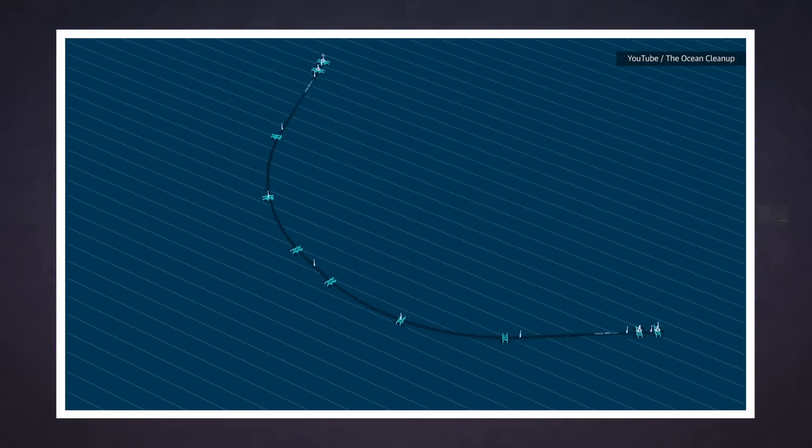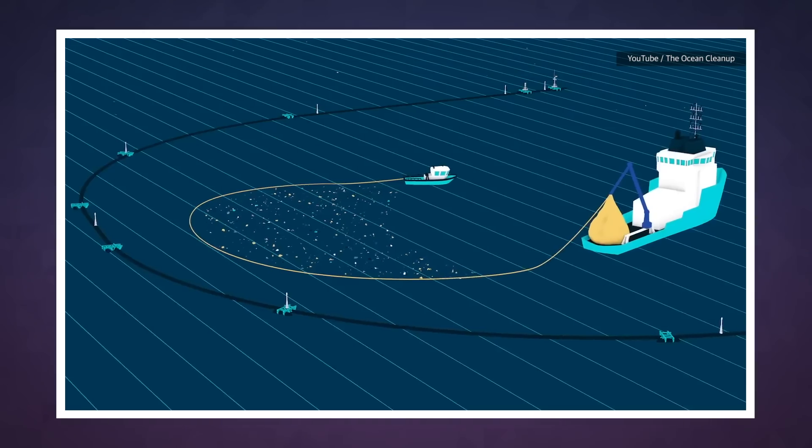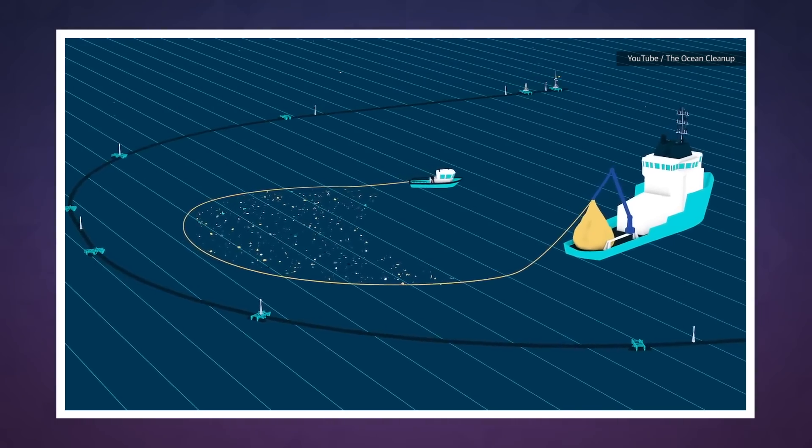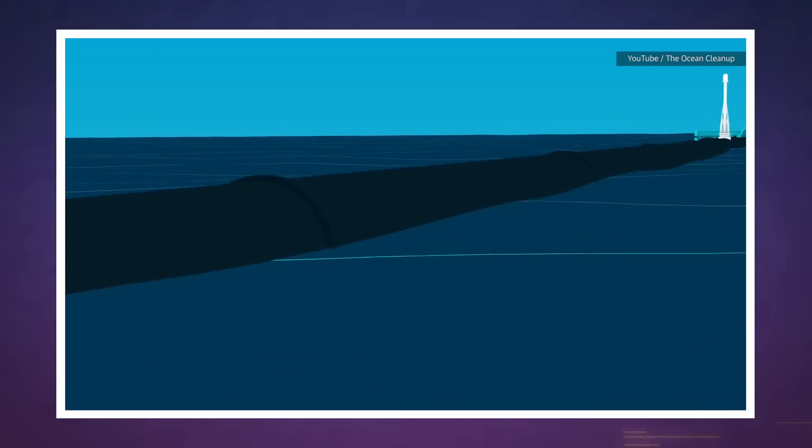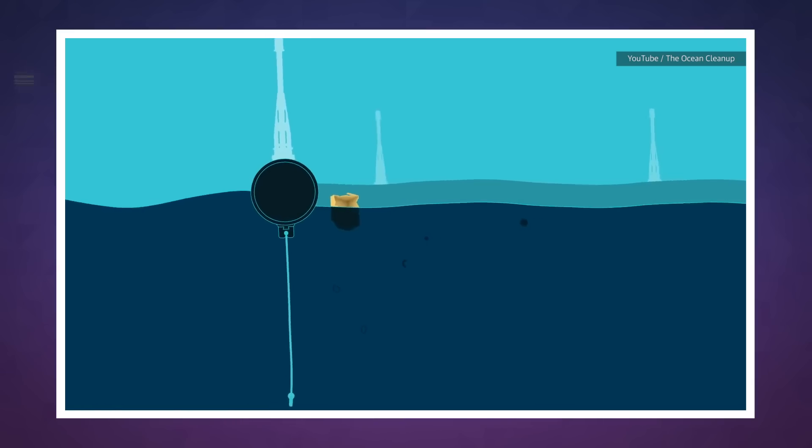Wind and waves will push System 001 into a U-shape. Then it will slowly drift along on its own while a 10-foot long skirt hanging below it will scoop up pieces of plastic as small as a millimeter in size.